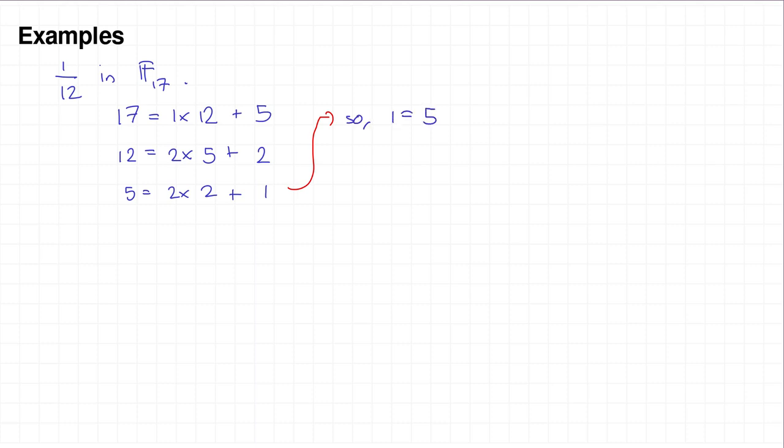So what are we doing? 1 is equal to 5 minus 2 times 2, which is... Well, 5 is 17 minus 12. And we've got 2 times... Well, where was 2? 2 first appeared as 12 minus 2 times 5. And that is 17 minus 12 minus 2 times 12 minus 2 times (17 minus 12). OK, so if you multiply those out, just collect the terms in 17. How many 17s have I got? I have 5 17s there and I have minus 7 12s. If you check that, you'll find it's correct.